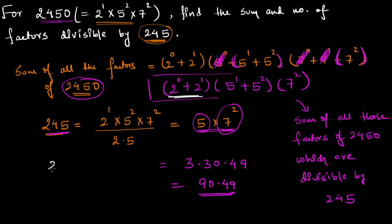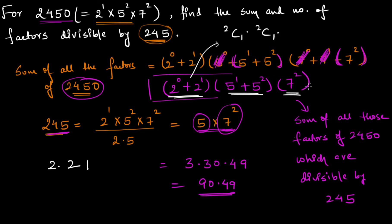The second question is how many such factors are possible. The number of terms in (2^0 + 2^1) is 2, the number of terms in (5^1 + 5^2) is 2, and from the 7^2 bracket there is only a single term — we have no choice but to pick it. So the total number of factors is 2 × 2 × 1 = 4. Therefore, there are exactly four factors of 2450 which are divisible by 245.